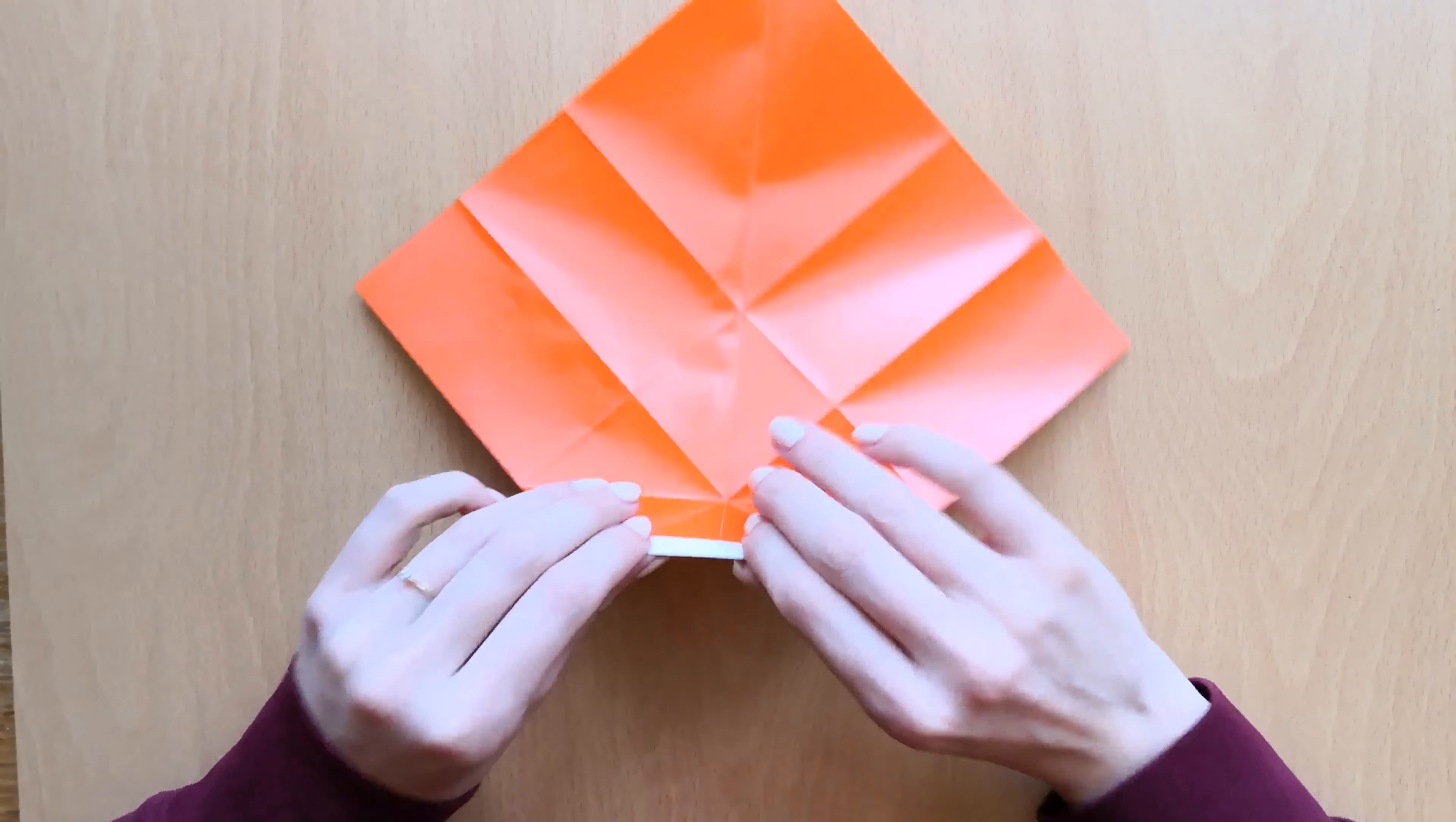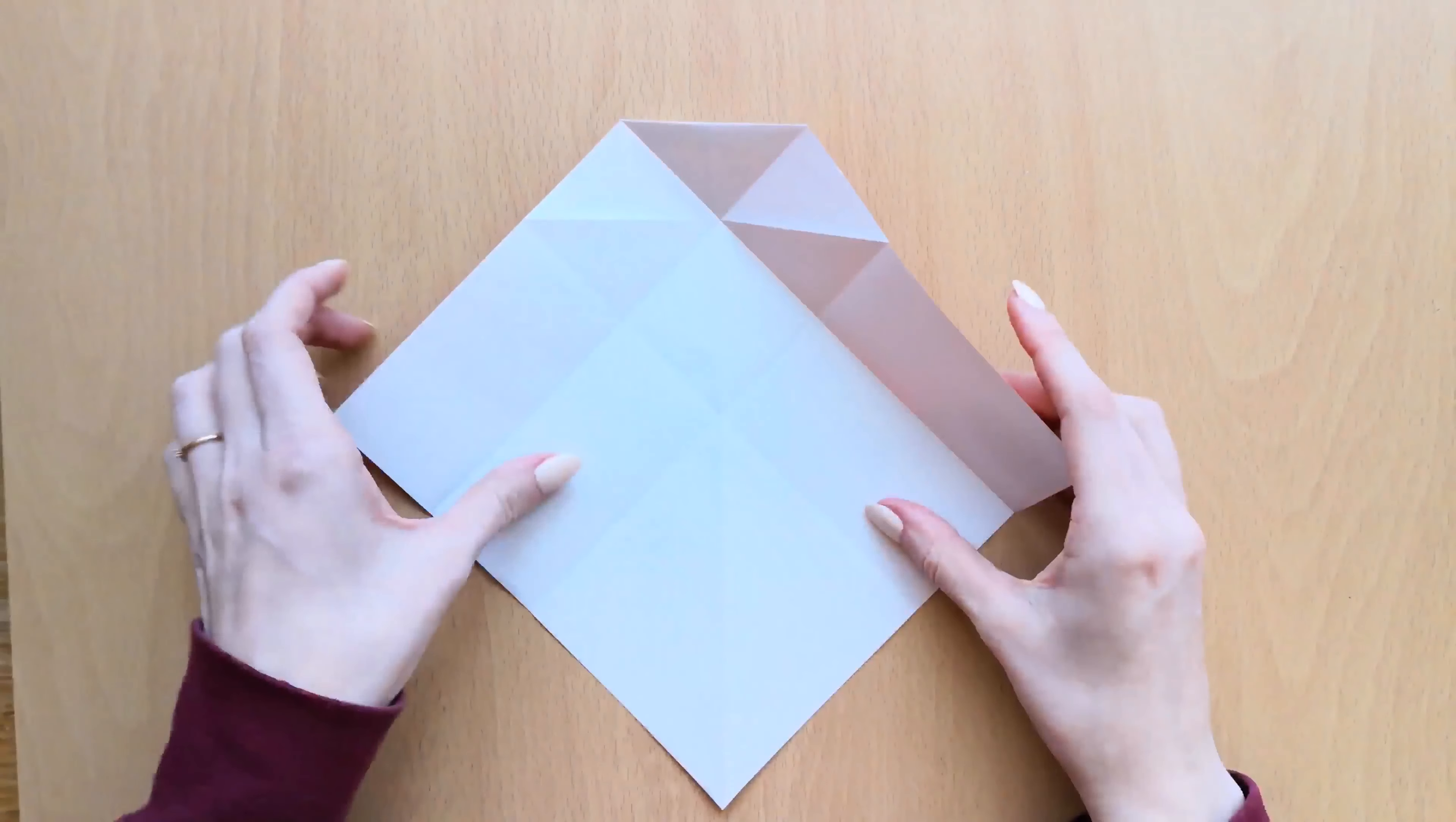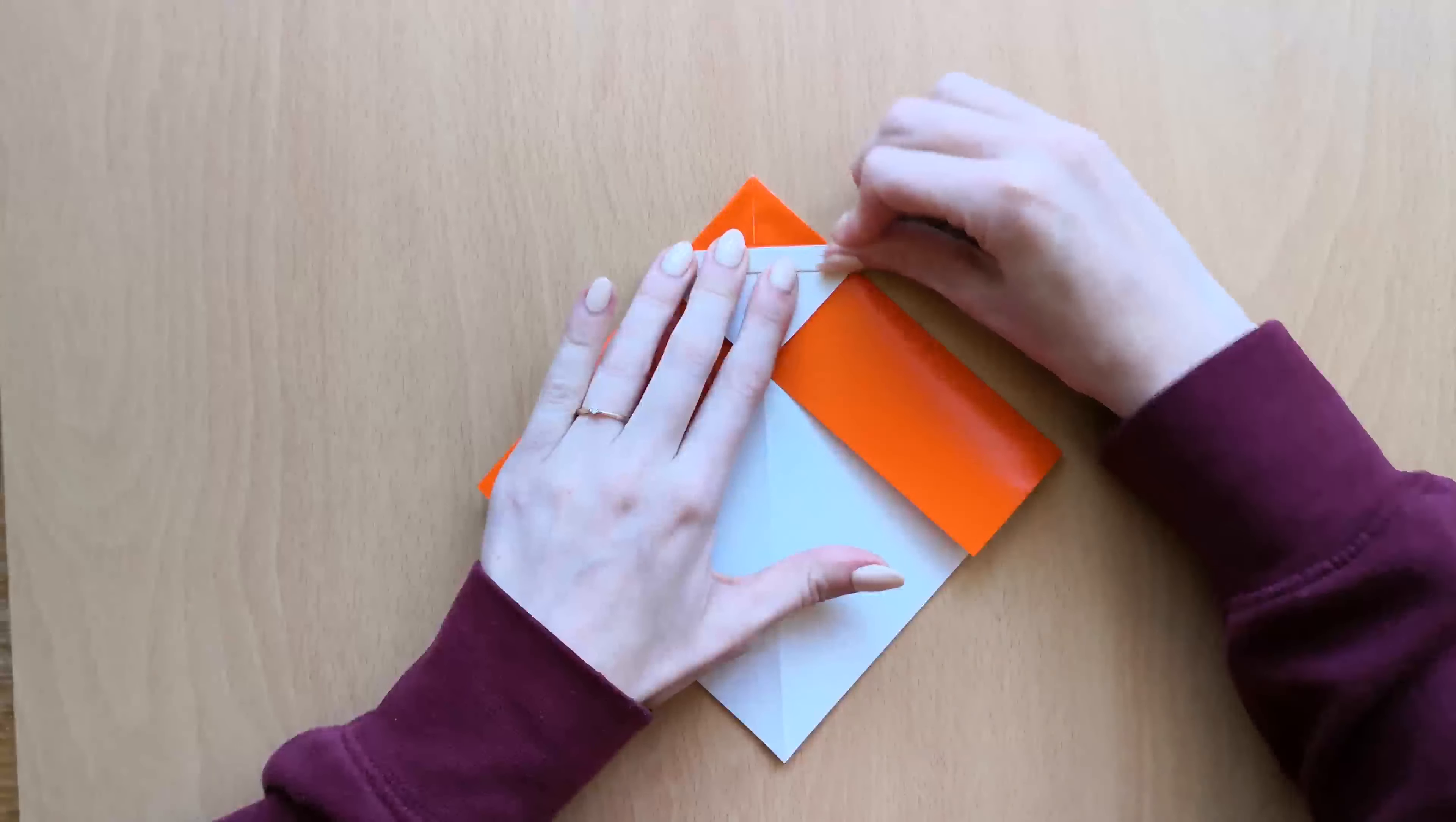Now we'll turn our paper around and we'll bring in those sides that we folded, the sides that we folded in the first step. And we'll press it down.